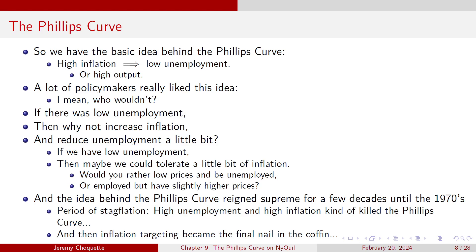From roughly the late 1950s until the 1970s, the Phillips curve idea reigned supreme. Then we entered stagflation in the late 1970s — a period of high unemployment and high inflation. But the Phillips curve predicts high unemployment goes with low inflation. Stagflation killed the Phillips curve, and then inflation targeting became the final nail in the coffin.